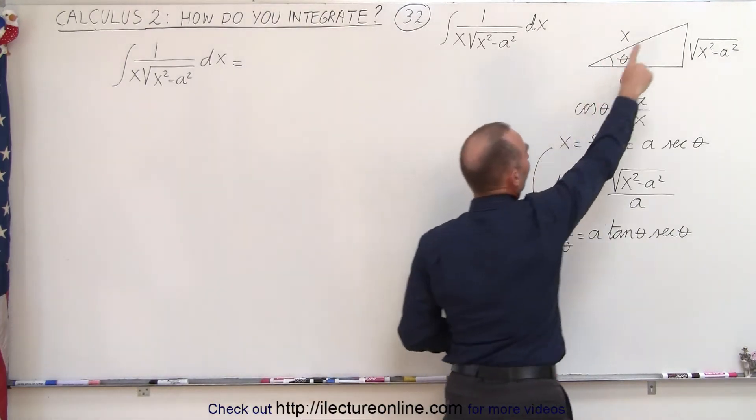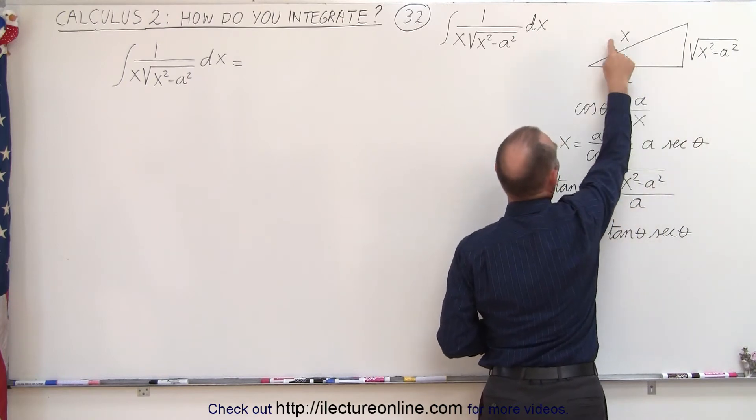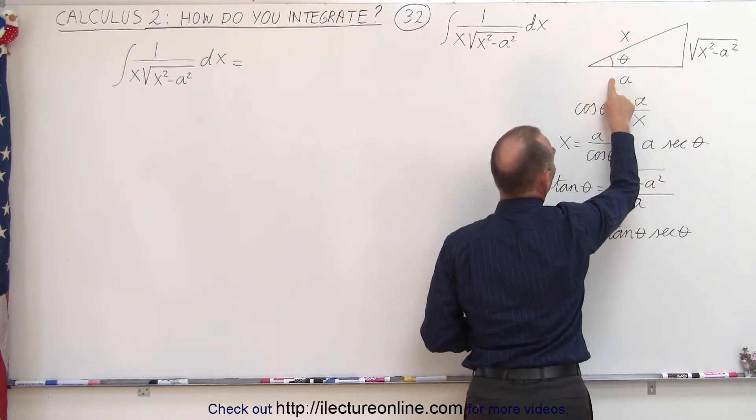We're going to use this format of the triangle because we have an x squared minus a squared, so we're going to have the hypotenuse as x, the adjacent side to the angle is a,